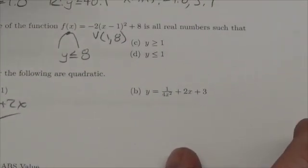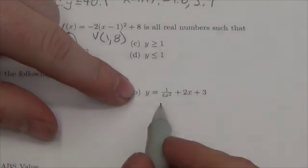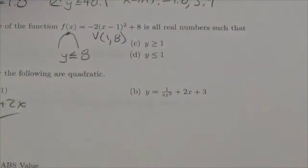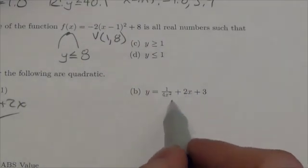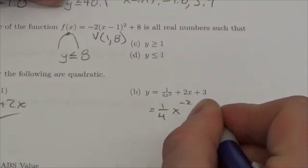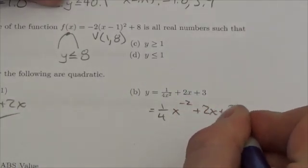Now look at part b here: y equals 1 over 4x squared plus 2x plus 3. Well, granted I am seeing an x squared term in there, but it's in the denominator. In fact, this would be like 1 quarter x to the negative 2 plus 2x plus 3.